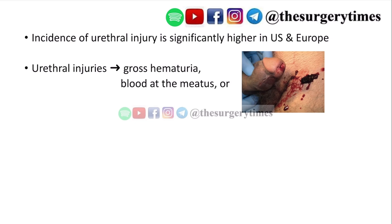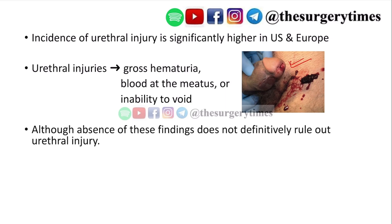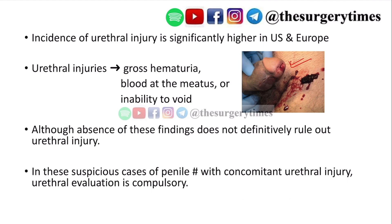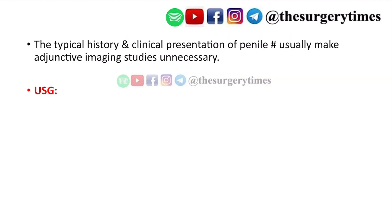Incidence of urethral injury is significantly higher in the US and Europe. Signs of urethral injury include gross hematuria, blood at the meatus, and inability to void. However, absence of all these features does not rule out urethral injury. In suspicious cases of penile fracture with concomitant urethral injury, urethral evaluation — such as retrograde urethrogram — is compulsory.